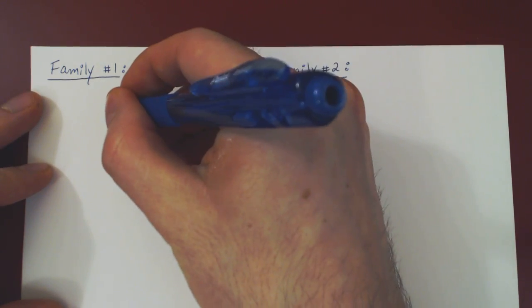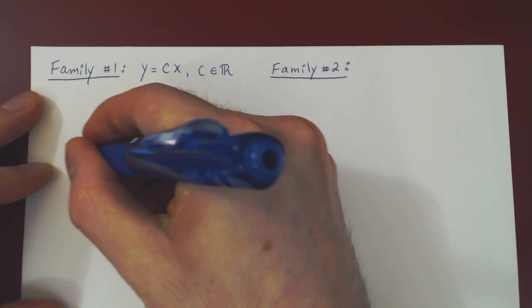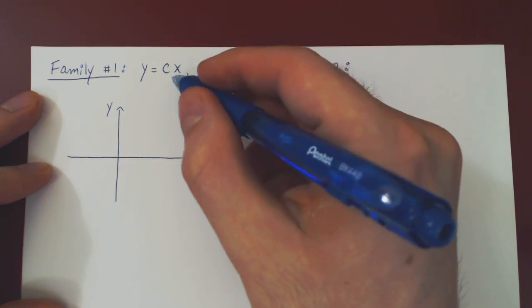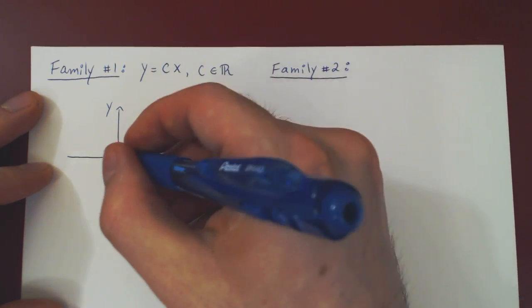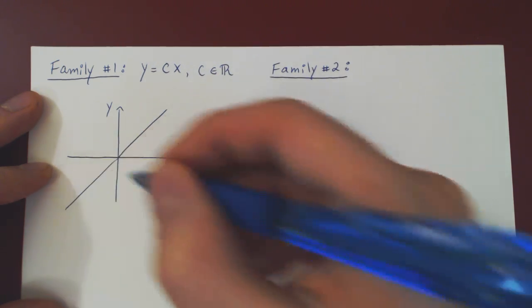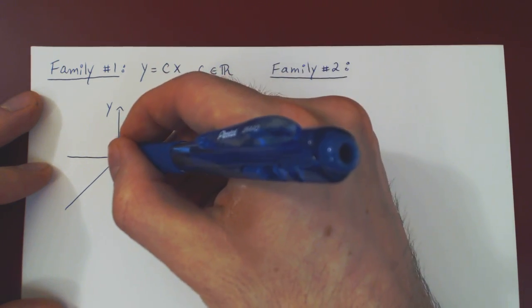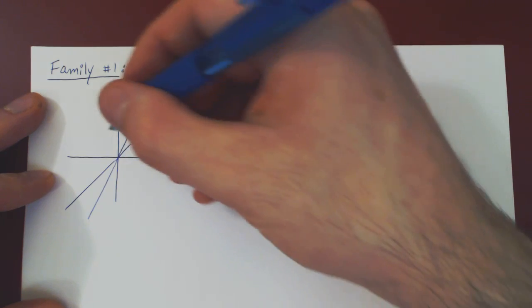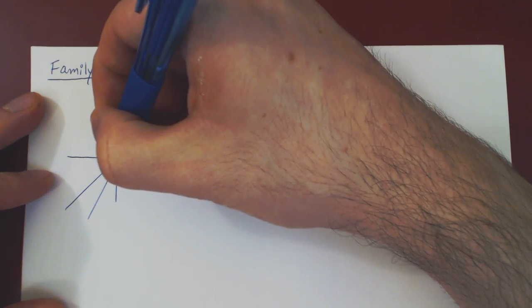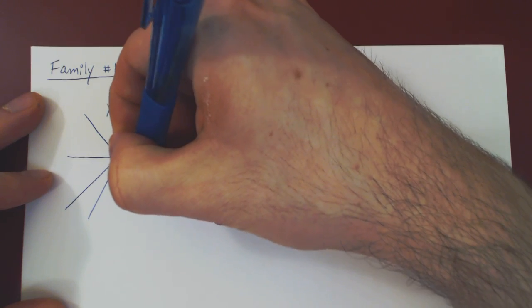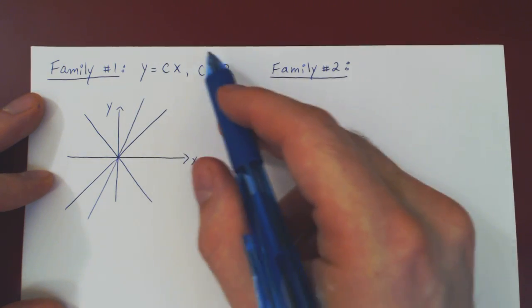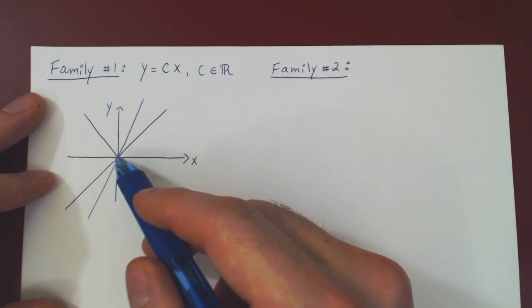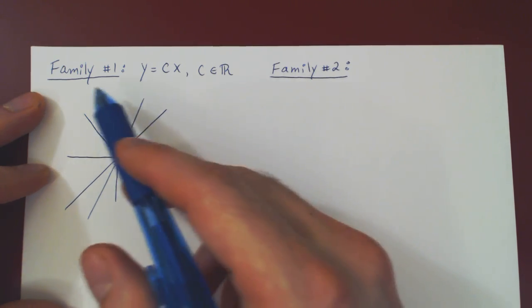So we can draw a few of those. You could take c to be 1 and then you get the curve y equals x, so line of slope 1 passing through the origin. You could take c to be 2, so y equals 2x, line of slope 2 passing through the origin. You could take c to be negative 1, so line of slope negative 1 also passing through the origin. And as you let c range over all real numbers, you get an infinite family of curves that are straight lines and they all pass through the origin. So that's our first family of curves.